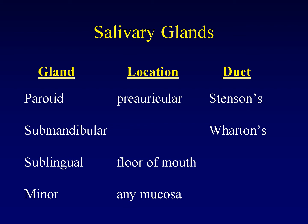There are four types of salivary glands: three major and one minor type. The parotid glands are located in the preauricular tissues and are drained by Stenson's duct. The submandibular gland is located in the submandibular triangle, as you would expect, and is drained by Wharton's duct.